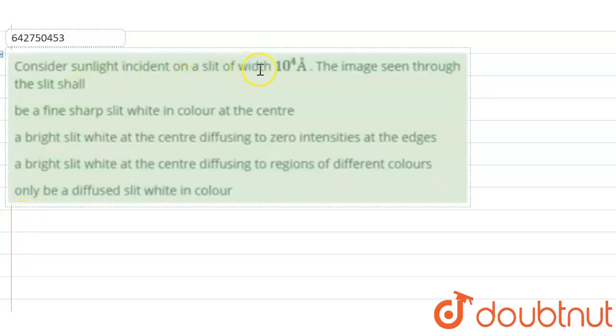Consider sunlight incident on a slit of width 10 to the power 4 angstrom. The image seen through the slit shall be: